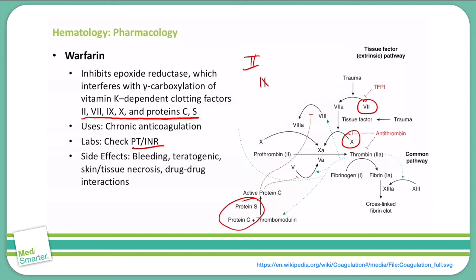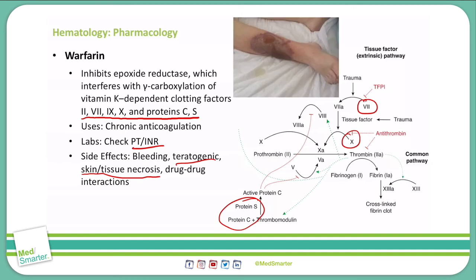Side effects associated with warfarin include bleeding, as we would expect for an anticoagulant. It is very teratogenic, so it is contraindicated in patients who are or expect to become pregnant. We can also see a problem called skin or tissue necrosis, where warfarin can cause microthrombosis in the skin and dermal layers that can present as a very dark-colored bruise, as seen in this picture on the lower extremity of this patient.